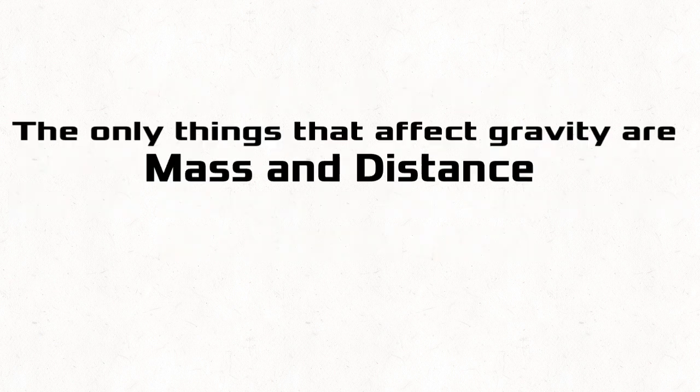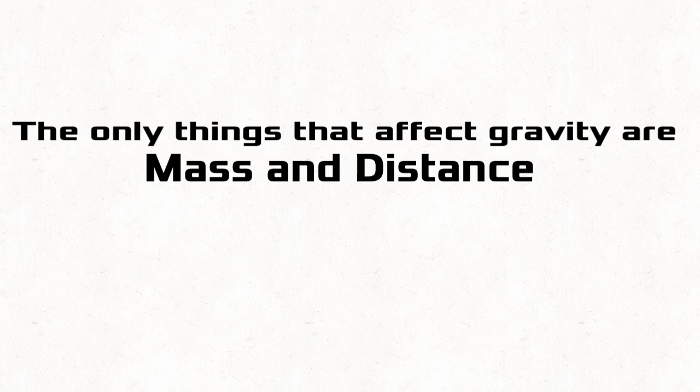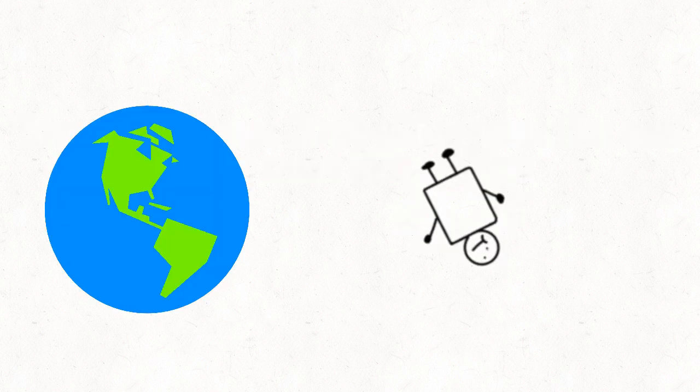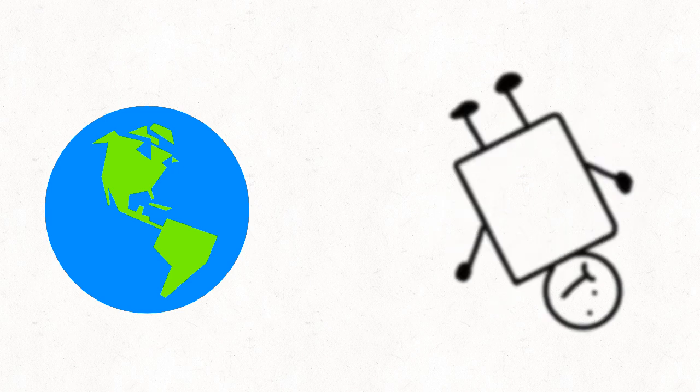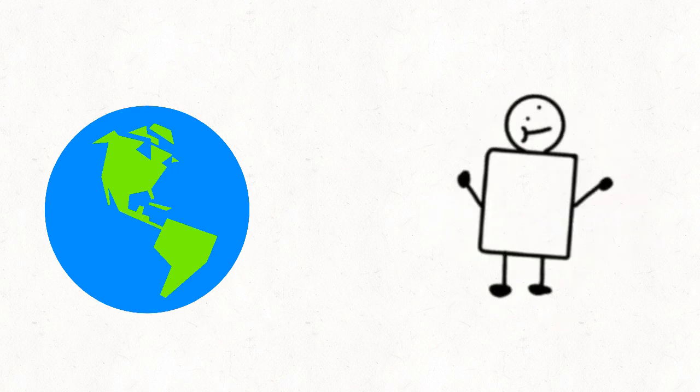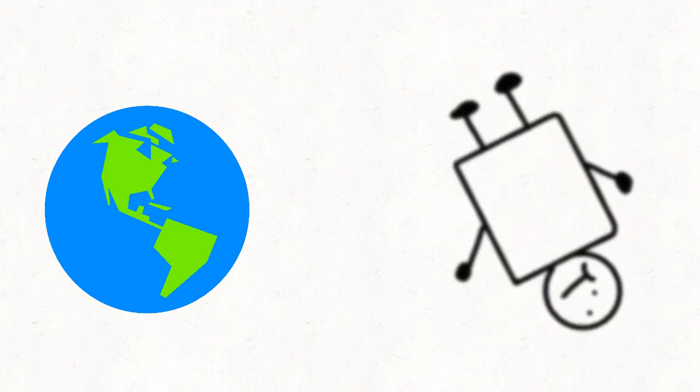The only things that affect gravity are mass and distance. Let's say David was floating towards Earth. If you were farther away from Earth, he would float towards Earth slower because distance affects gravity. If you were to gain weight, he would float towards Earth faster because mass also affects distance.